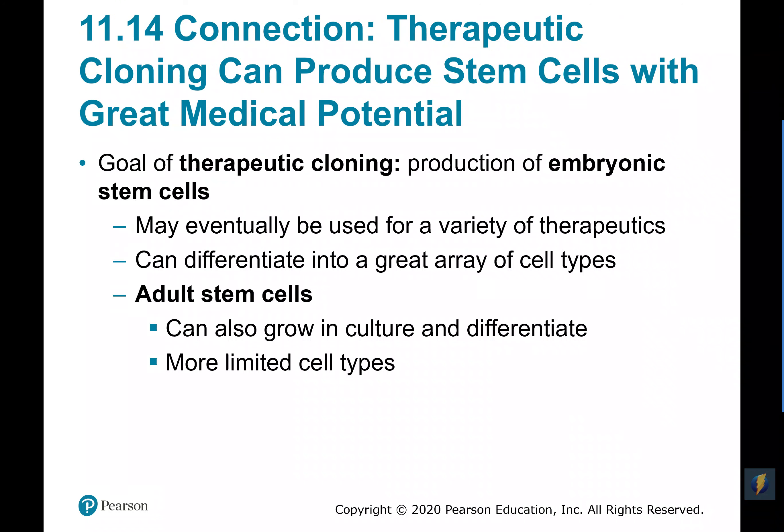Some of what we can get from cloning involves using embryonic stem cells. For instance, if you've ever had a child and saved the baby's cord blood, that cord blood is full of embryonic stem cells. Embryonic stem cells have much more totipotency than adult stem cells and essentially have the ability to differentiate into practically any cell type in the body. Adult stem cells can still go through mitosis and differentiation in culture, but the cell types you can obtain from an adult stem cell are much more limited.